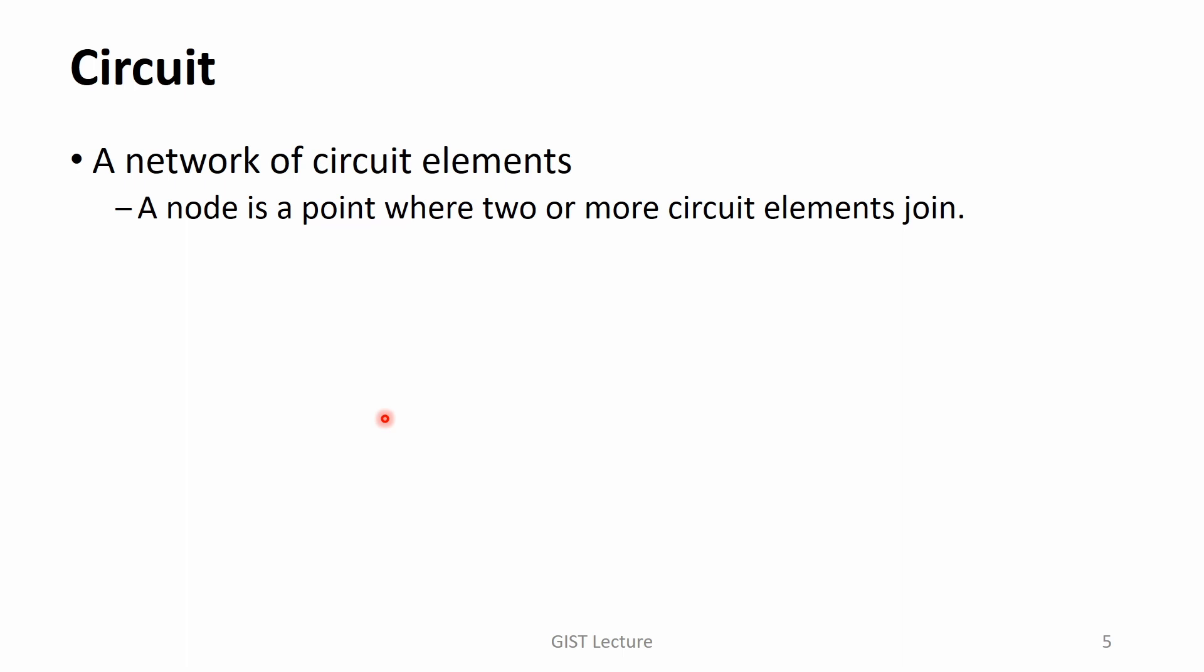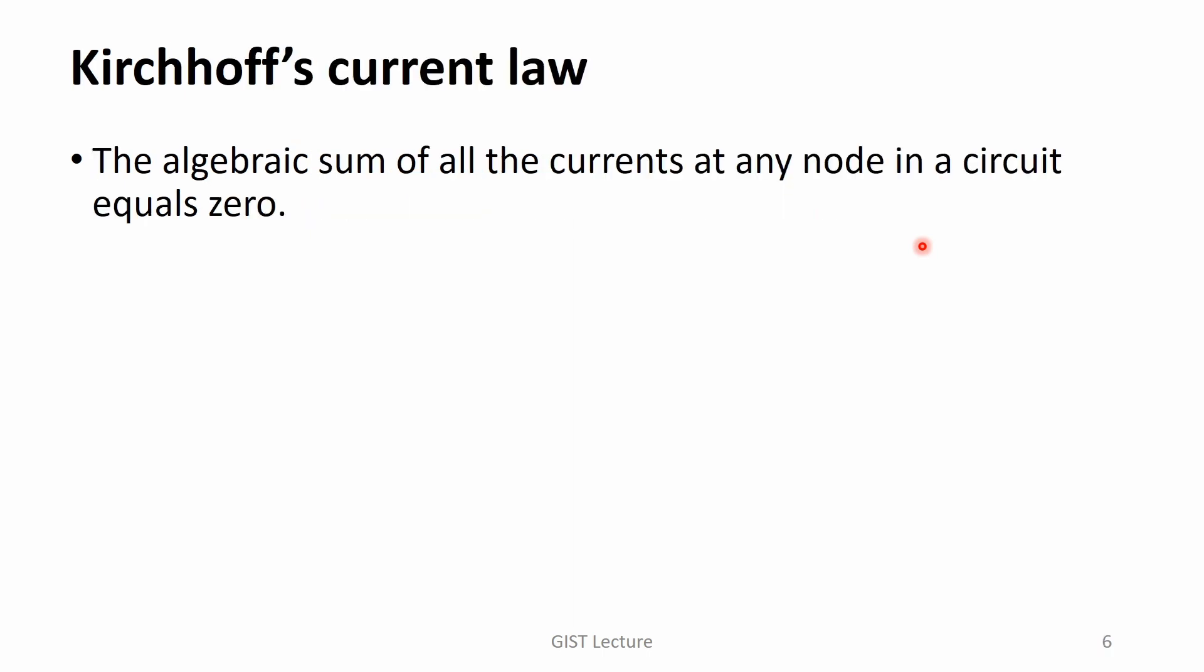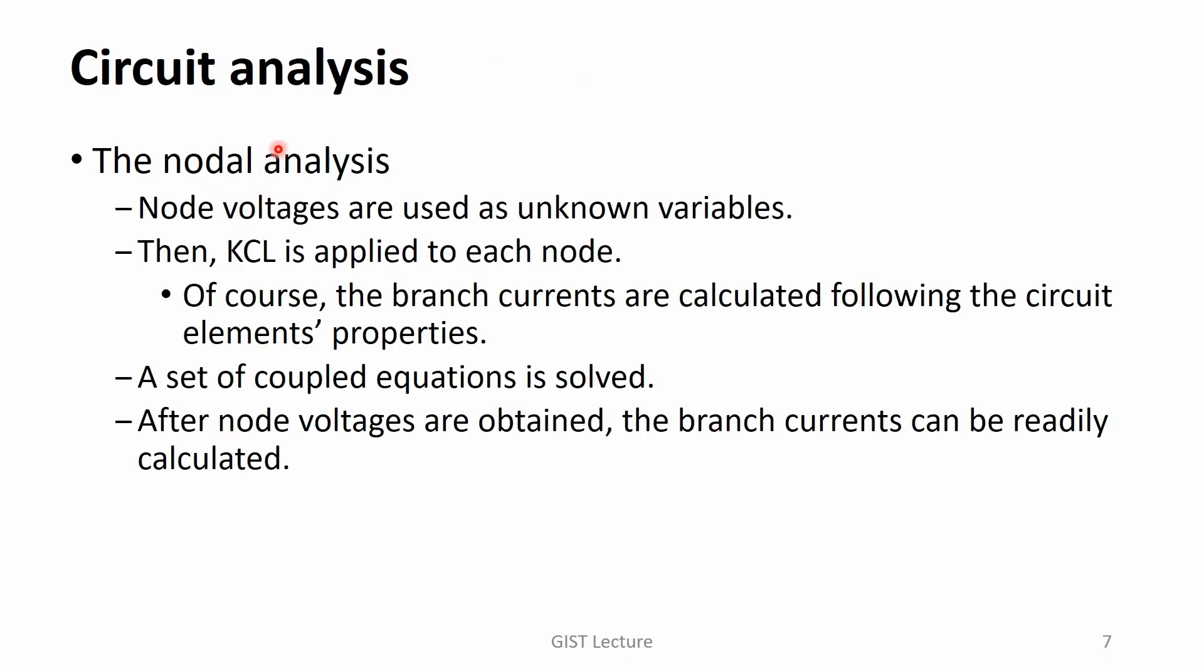Once we have circuit elements building blocks of a circuit, we can construct a circuit by connecting their terminals. A circuit node is a point where two or more circuit elements join. Now, in addition to terminal voltages and currents, we have node properties to be found. As you might know, Kirchhoff's current law, KCL, is the equation for the node. The algebraic sum of all the currents at any node in a circuit equals zero. When we obtain all the terminal voltages and currents, also the node voltages, we say that the circuit is analyzed.